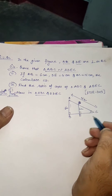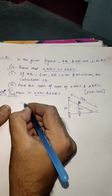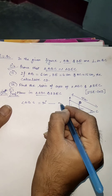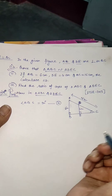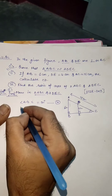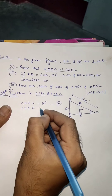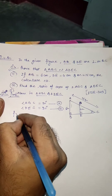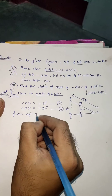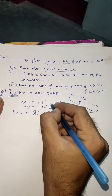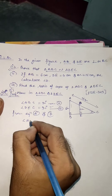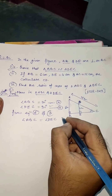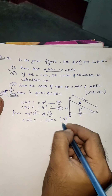In triangle ABC and triangle DEC: in triangle ABC, angle ABC is 90 degrees — call this equation A. In triangle DEC, angle DEC is also 90 degrees — call this equation B. From equations A and B, both angles are 90 degrees, so angle ABC equals angle DEC.